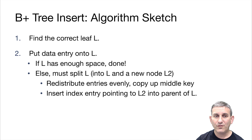Then if there's room for the data item on that leaf L, we're done. If there isn't room, then we're going to split L into L and a new node L2. We're going to redistribute the entries that were on L along with the new data entry across L and L2 in order, and we'll copy up the middle key, which is the smallest key on the right-hand side, as a new index entry to be inserted above.